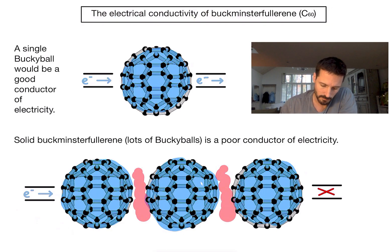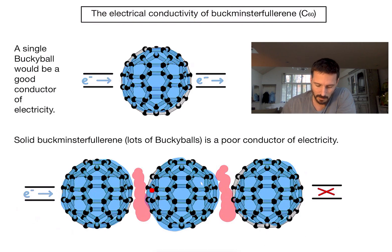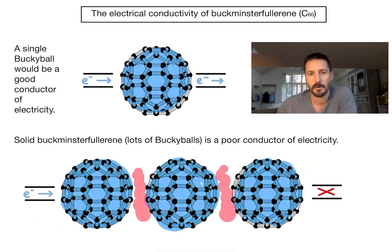Now what does that mean? Well, it means if I start pushing electrons onto my left-hand bucky ball, for an electron to jump onto the next molecule there is actually a bit of a gap that it needs to get across. So for that reason it becomes more difficult for electrons to pass through my solid substance, and therefore Buckminster Fullerene is considered a poor conductor of electricity.